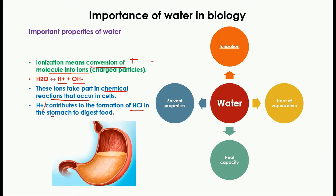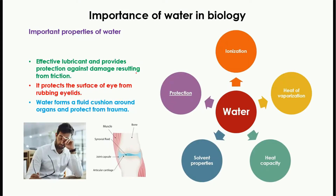For example, the hydrogen ion combines to form HCl — hydrochloric acid — which is present in the stomach and is very important for the digestion of food. Here you can see the stomach, and the acid HCl is formed when the chlorine atom combines with the hydrogen atom.